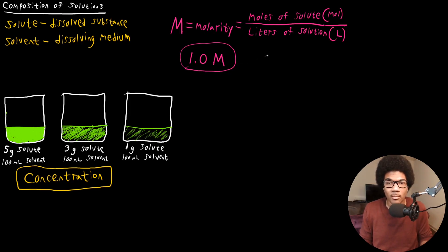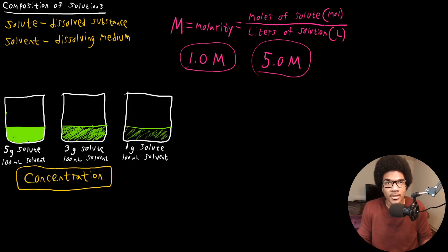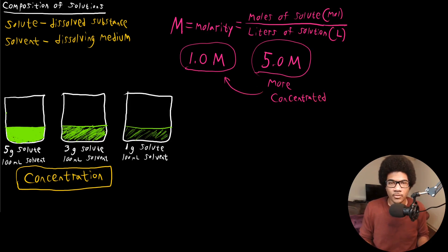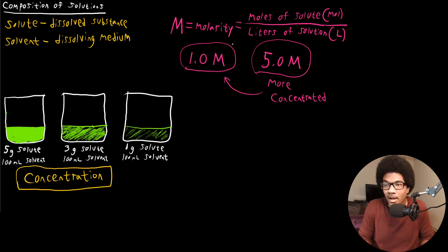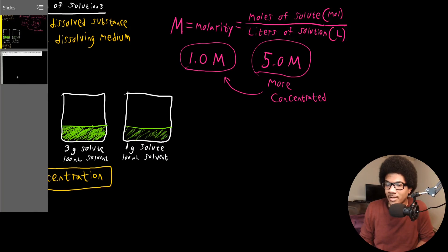If you have a solution that's one molar versus a solution that's five molar, the five molar solution has more solute per liter of solution, meaning it would be more concentrated than the one molar solution. This gives us a way to quantify the composition of a solution and put it on a quantitative footing. Let's look at an example problem.